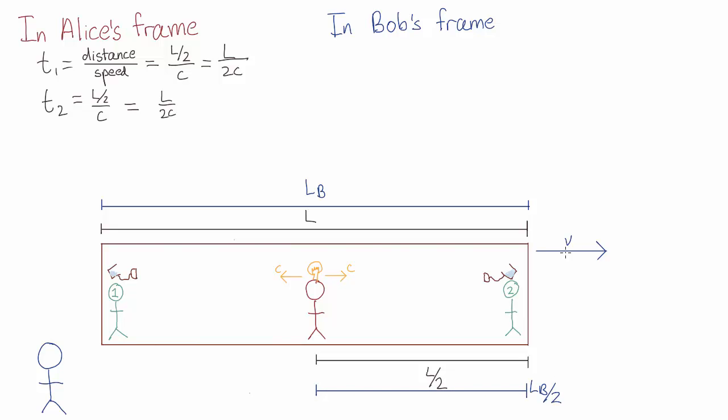Now in Bob's reference frame, his friends are moving to the right at speed v, as is Alice. What are the times, t1 and t2, that Bob records between Alice turning on her light and his friends getting dunked?